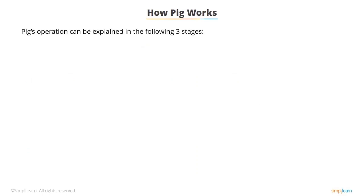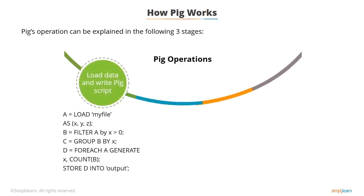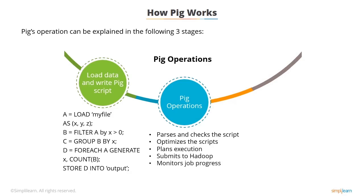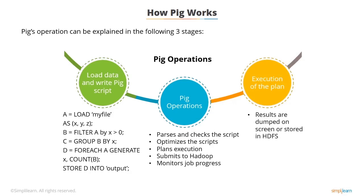PIG's operation can be explained in three stages. In the first stage, the data is loaded and a PIG script is written. In the second stage, the PIG execution engine parses and checks the script. If it passes, the script is optimized and a logical and physical plan is generated for execution. The job is submitted to Hadoop as a job comprising MapReduce tasks. PIG monitors the status of jobs using Hadoop API and reports the status to its client. In the execution stage, the results are dumped onto the screen or stored in HDFS, depending on the user command.